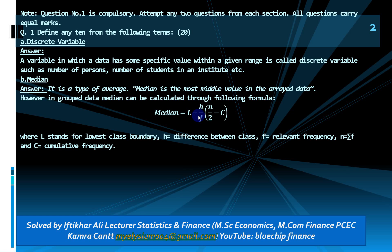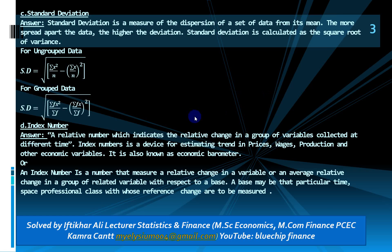In grouped data, median can be calculated through the formula: L plus H over F, multiplied by (n/2 minus C). Third: trend deviation. Trend deviation is an absolute measure of dispersion, and formulas for both ungrouped and grouped data are also given.